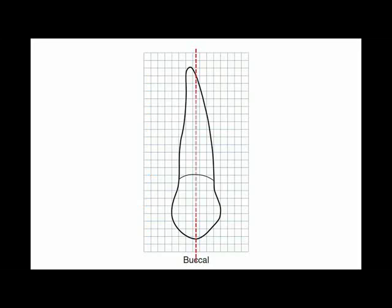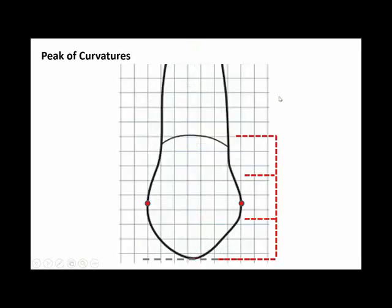If we draw a bisecting line that bisects the crown, notice that the apex of the root is about 1 mm distal to the line. The peak of curvatures, both medial and distal, are at the same level, which is within the middle third. It is about 4 mm from the tip of the cusp.